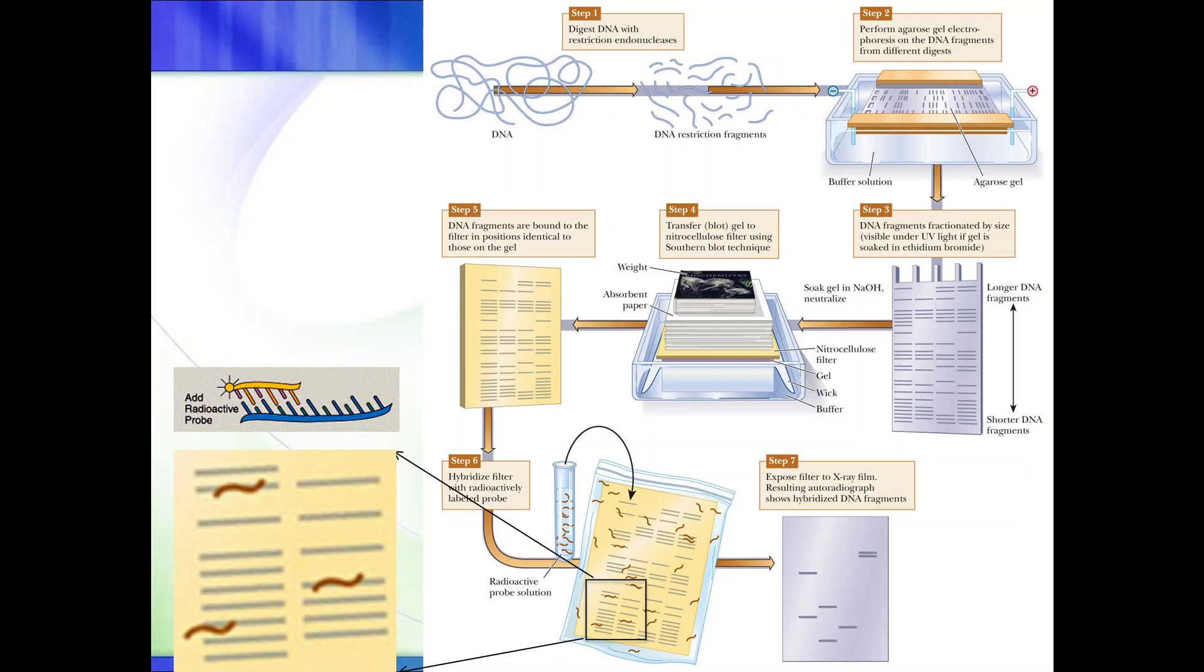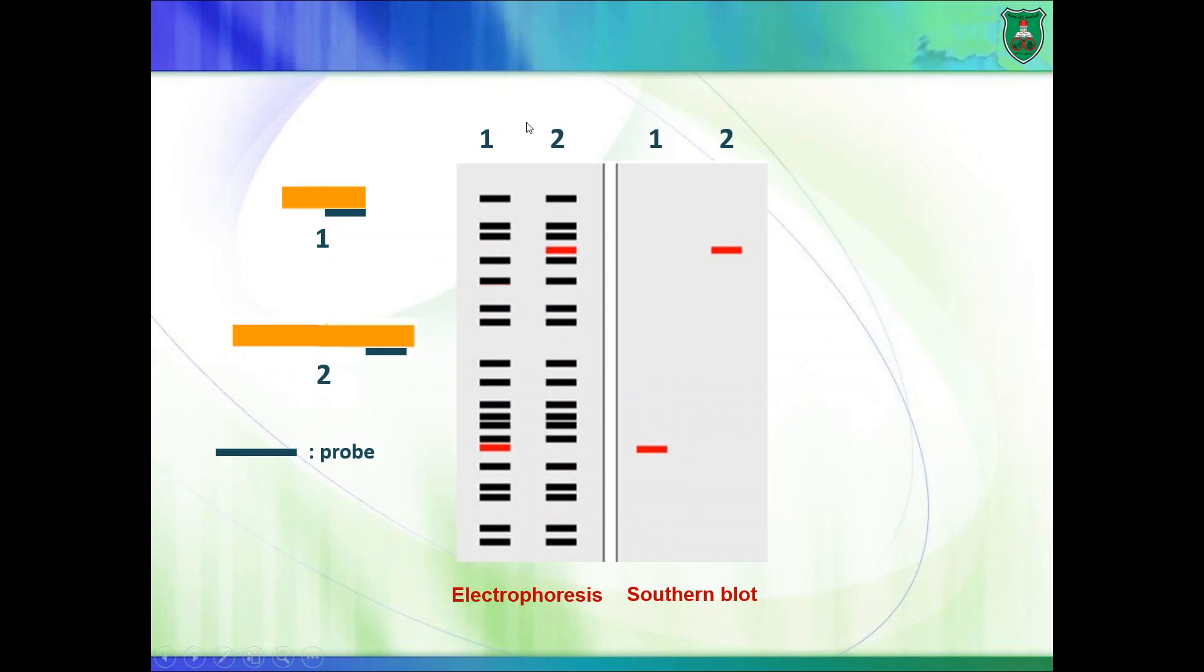Right here, let's say I have two samples, one and two, from two individuals. We as human beings are similar in our DNA sequence, or in our DNA overall, by 99.99%. So we are different by 0.01%.